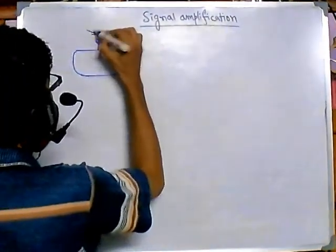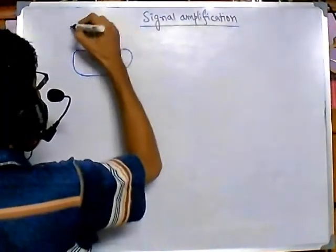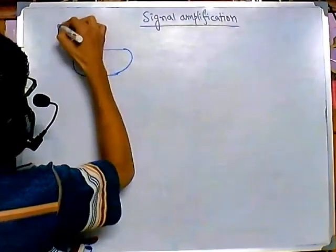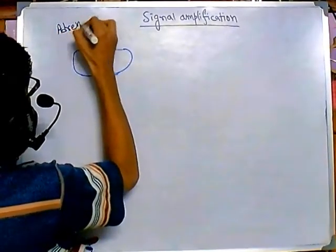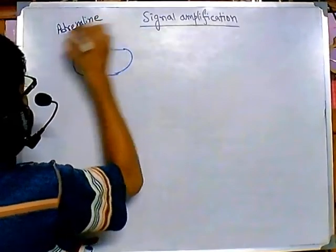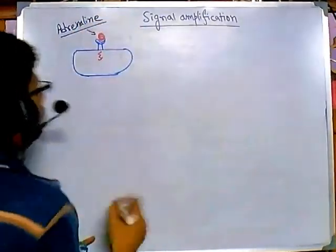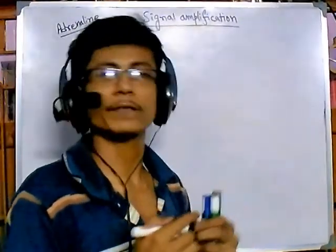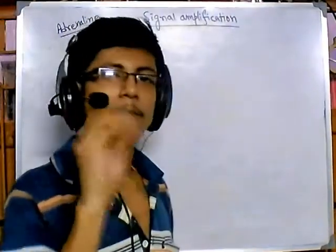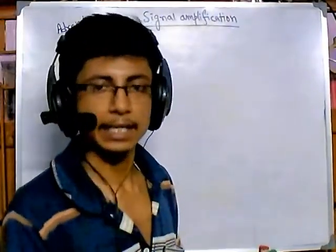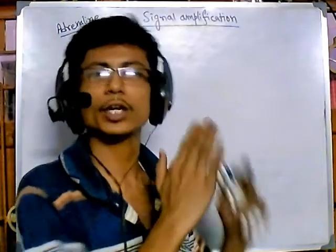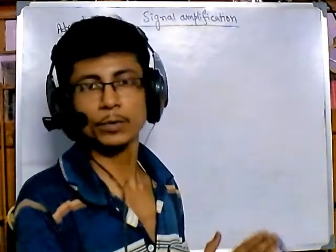Let's talk about amplification using a specific molecule. Let's say this hormone is adrenaline. Once this adrenaline hormone reaches the adrenaline receptor on the surface of the cell, it starts to amplify the signal more inside the cell. We need to understand the signal transduction of adrenaline and see the degree of increment of the signal inside the cell.